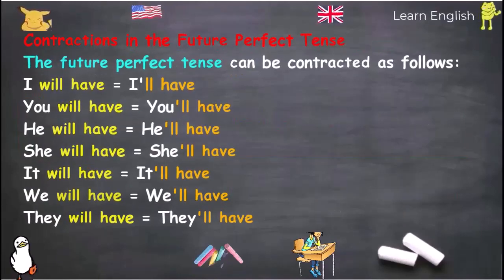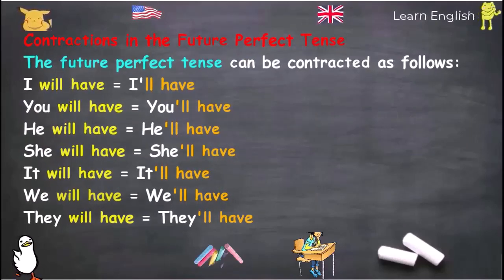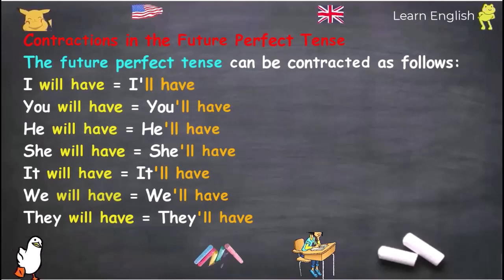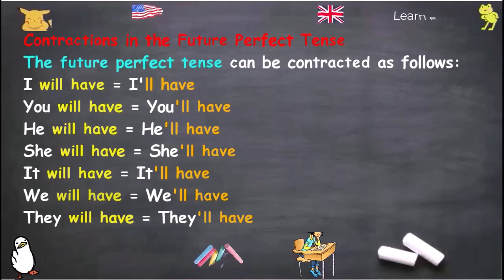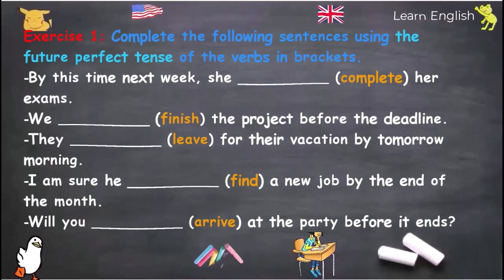Contractions in the Future Perfect Tense: I will have → I'll have. You will have → You'll have. He will have → He'll have. She will have → She'll have. It will have → It'll have. We will have → We'll have. They will have → They'll have.